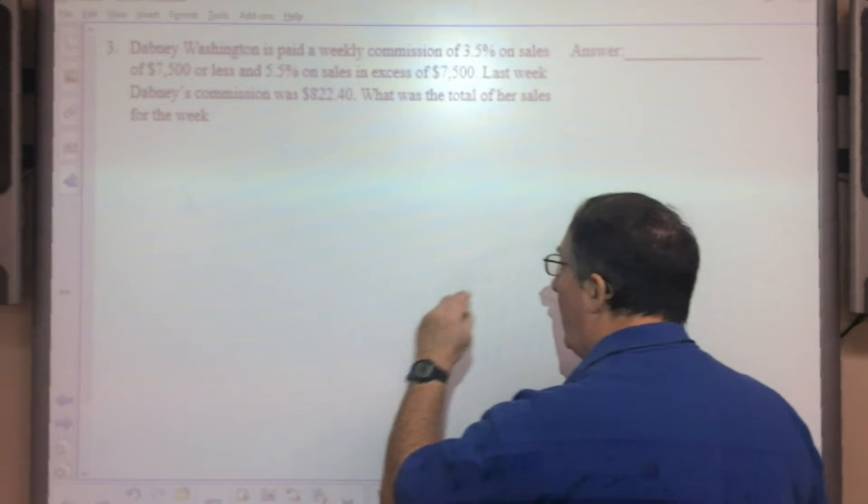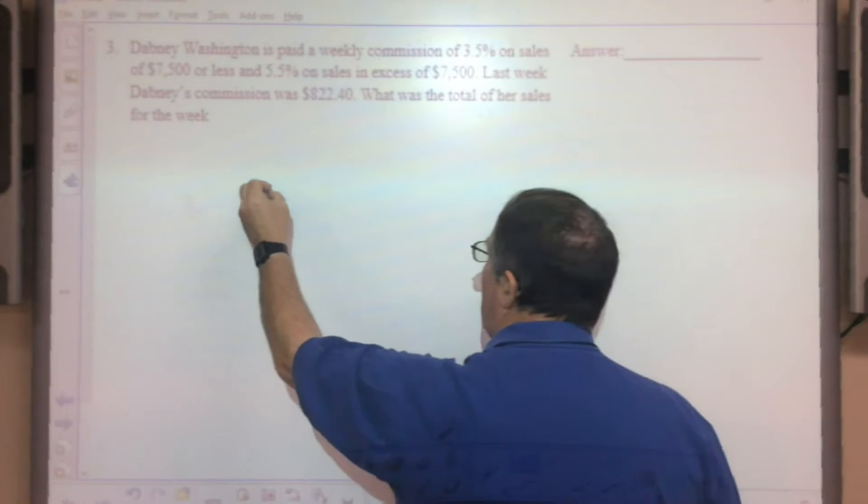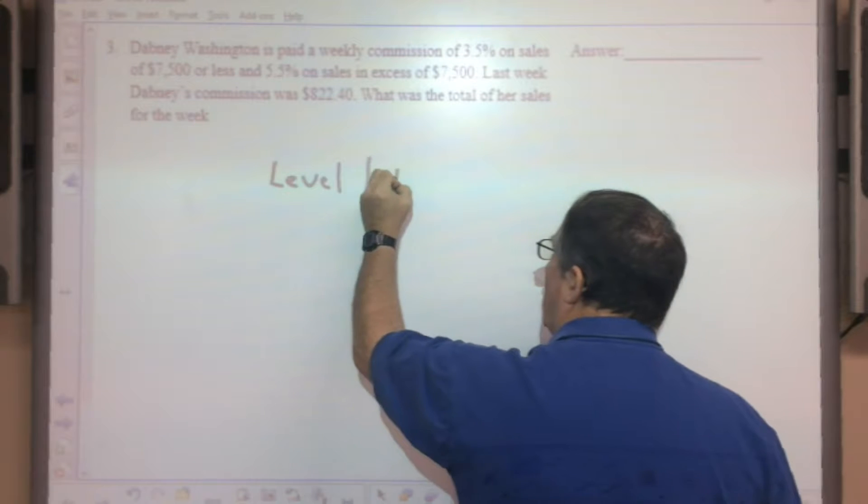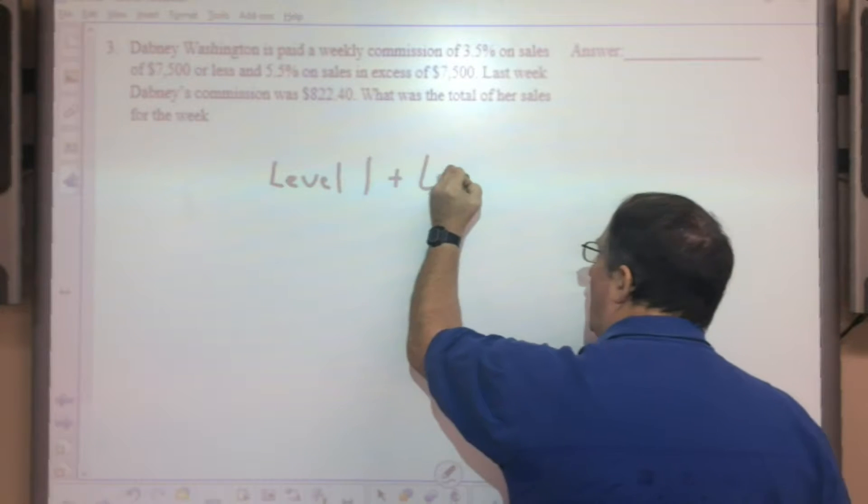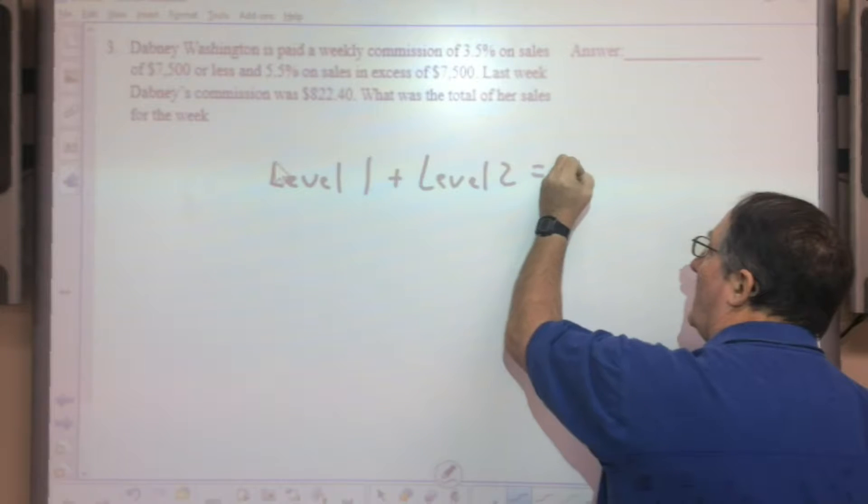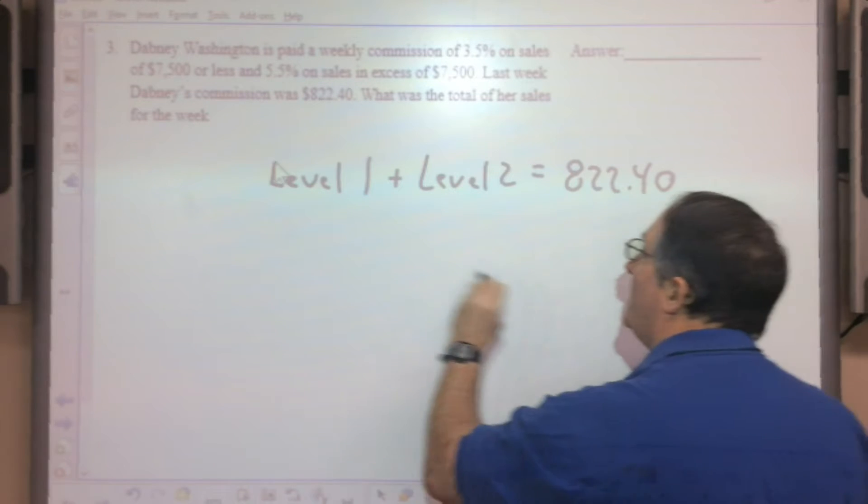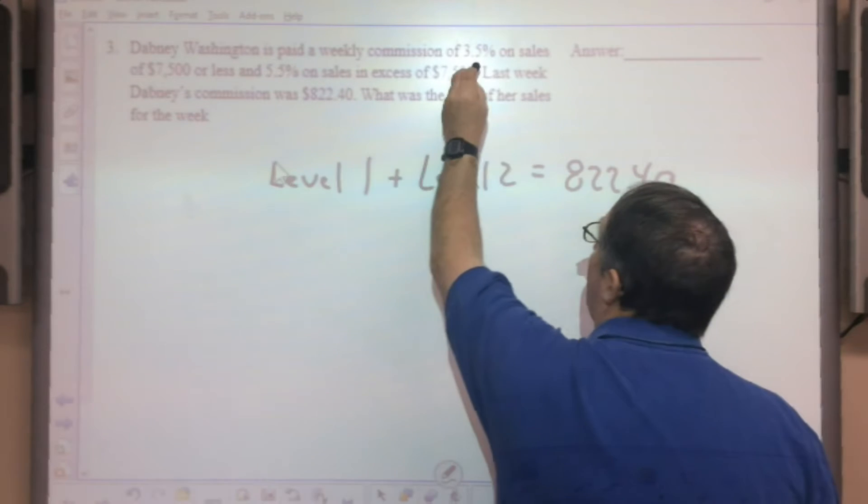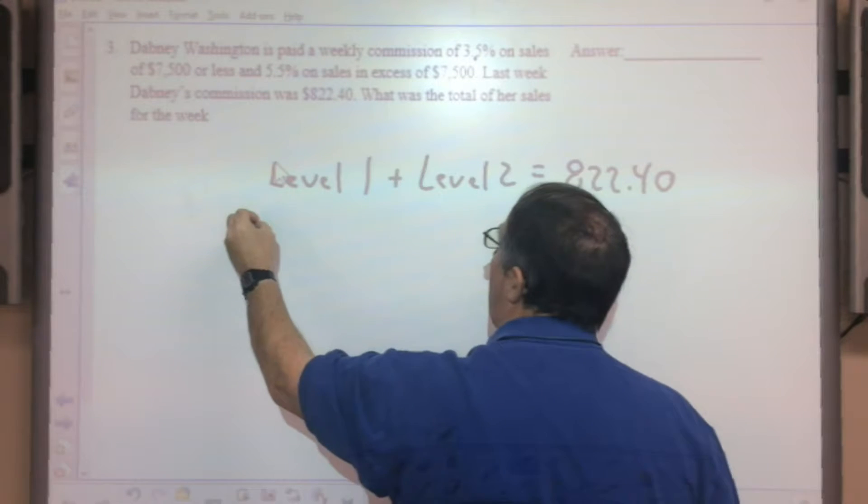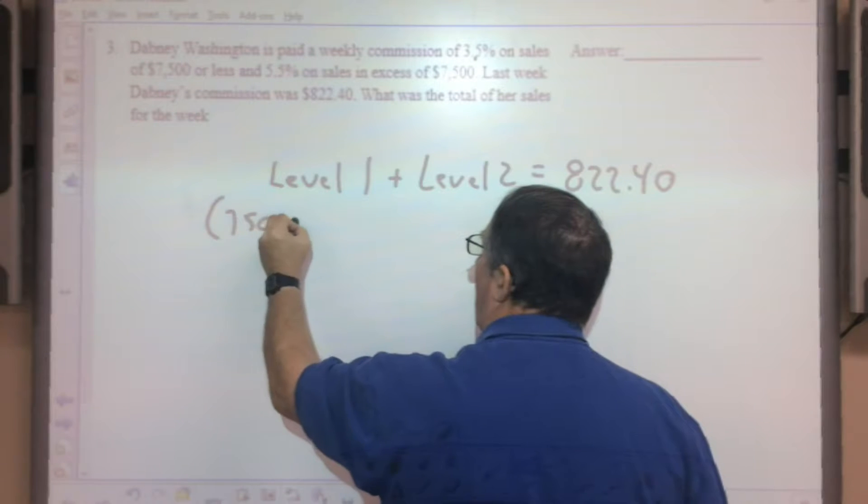So Dabney Washington is paid a weekly commission of 1.5% on sales of $7,500 or less, and a different commission on the other levels. Level 1 plus Level 2 is going to equal the commission of $822.40. So you've got to figure out, did you sell enough to get into Level 2?